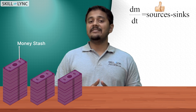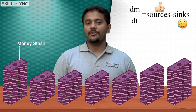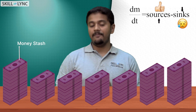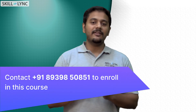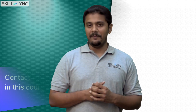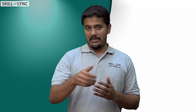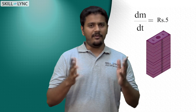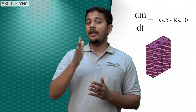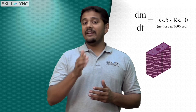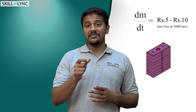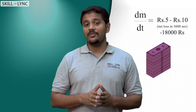Sources help you gain more money and sinks help you lose more money. If you have more sources of money than sinks, then your rate of change of money with respect to time is going to have a positive slope and you will end up with a lot of cash. An example would be to enroll in a course at Skilllink, gain awesome skills, and get a job which helps in increasing your sources of income. That being said, if you have more sinks than sources, then you will be in trouble as you start to lose money. Say that you earn 5 rupees a second — but what if you also lose 10 rupees at the same second? Your dm/dt would be 5 minus 10, which is equal to negative 5. If you integrate this simple ordinary differential equation for 3600 seconds, then you would have lost 18,000 rupees in just one hour, which is pretty bad.